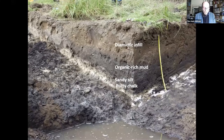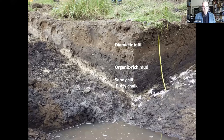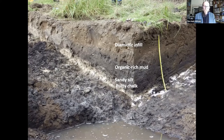The infill of site number two shows it to be a shallow depression. The basal unit is putty chalk with a thin layer of sandy silt on top. Above that is an organic-rich mud containing finely scattered heat-crackled flint fragments and some rare bits of animal bone. Over the top is a diamictic infill of sandy clay with broken flints — this is not natural, but evidence of backfilling for agricultural purposes, probably in the early 20th century.